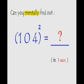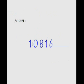Can you mentally find out — and the emphasis is on the word mentally — what is 104 squared? You get three seconds for that. Your time is up. The correct answer is 10816. I am sure that you got the same answer, because once again you have to use the same base method for squaring numbers. Let's see how.